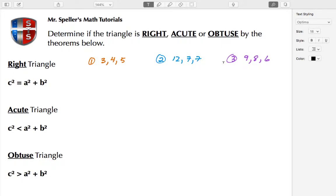If a triangle is a right triangle, then the hypotenuse squared will be equal to the sum of the square of the legs. If it's an acute triangle, then the hypotenuse squared will be less than the sum of the squares of the legs. And if it's an obtuse triangle, the hypotenuse squared is going to be greater than the sum of the square of the legs.